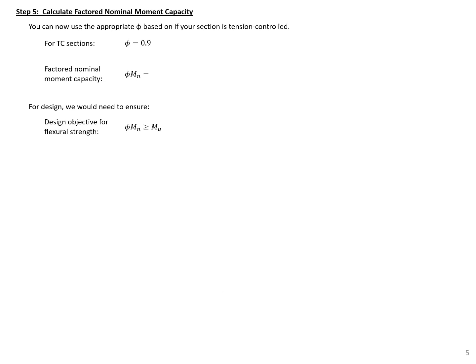Taking phi of 0.9 times M sub n of 4,565 kip-inches gives us phi M sub n equal to 4,109 kip-inches. This is our factored nominal moment capacity.